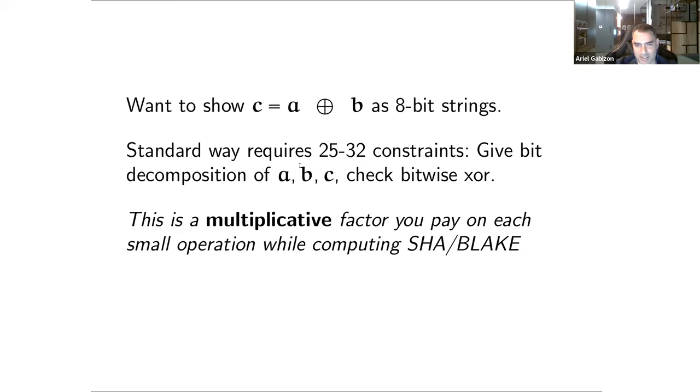The problem with this 25 to 32 is that it's not something you pay once, it's a multiplicative factor that you pay. Think of doing a SHA or BLAKE hash - if you look at the description, every instruction is one of these operations. So if you try to write your hash function as a sequence of eight bit operations, you're going to pay this 30 factor for every operation when you write it inside the SNARK.